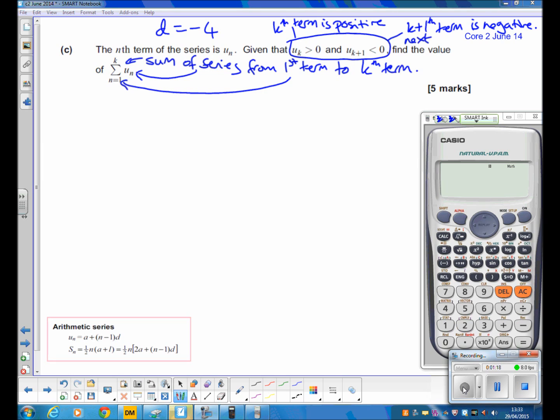This works because the common difference is a negative number. We found it was minus 4, so this sequence is going down and it's eventually going to get into negative numbers.